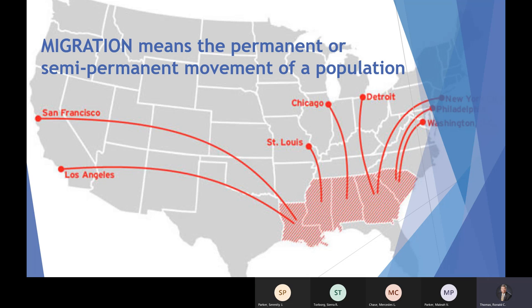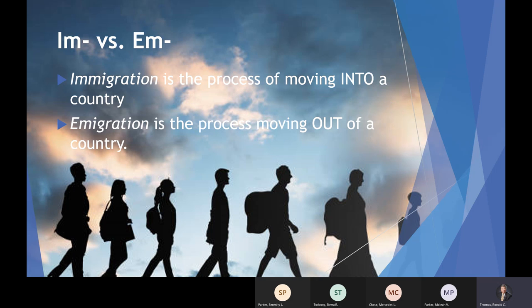Remember, migration means permanent or semi-permanent — these are people leaving behind where they came from and committing themselves to where they're going. Now, the similar words start differently: we have the prefix I-M and the prefix E-M. Immigration is the process of moving into a country — use the letter I to think of 'in.' Emigration is moving out of a country — use the E to think of 'exit.' So immigration and emigration are two different things: moving in or moving out.